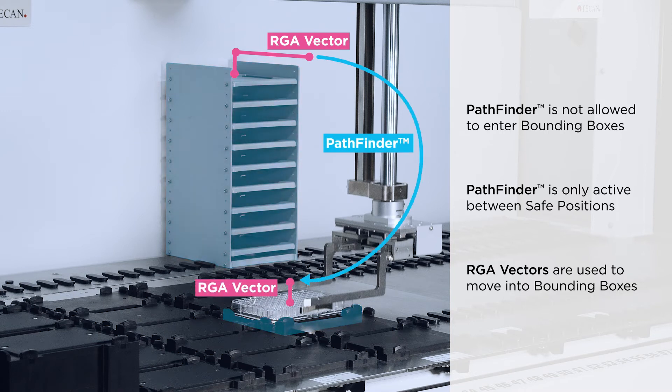Pathfinder automatically controls the part of the movement between the safe position of the source carrier and the safe position of the target carrier. Each safe position must be outside of the bounding box.